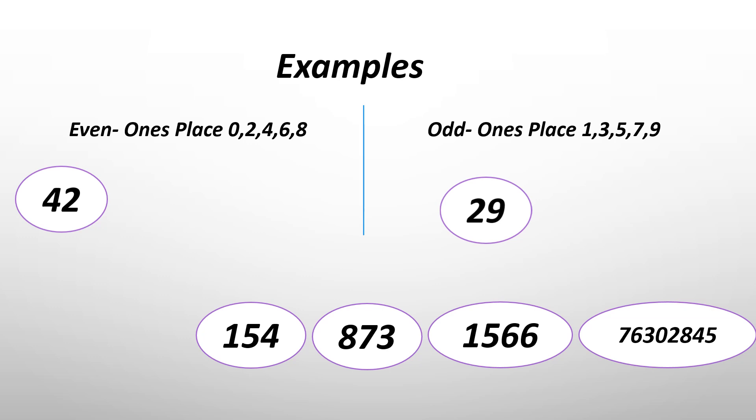Now let's look at 154. The last number is 4. So it goes in the even section. Now let's look at another example, 873. The last number is 3. So it goes in the odd section.